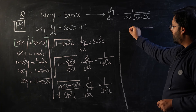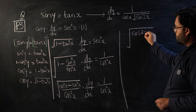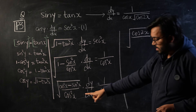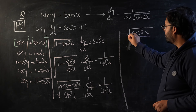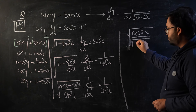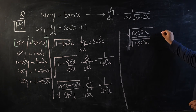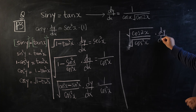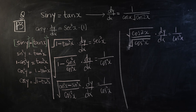So I write that as cos 2x divided by cos squared x, under the square root. Let's split the square roots — in the denominator we have the square root of cos squared x, times dy/dx, equals 1 over cos squared x.